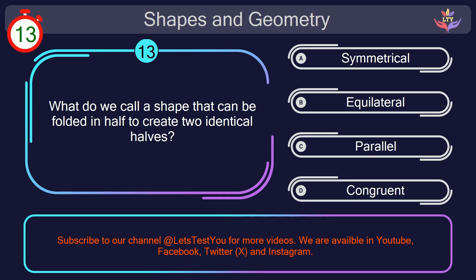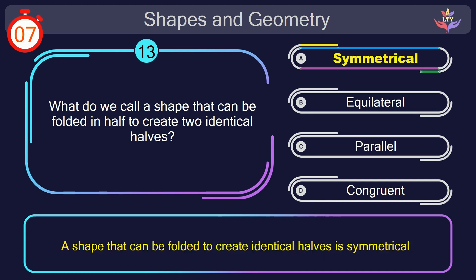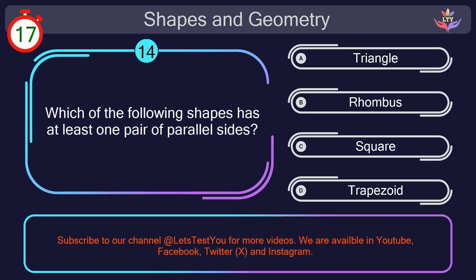Question number 13. What do we call a shape that can be folded in half to create 2 identical halves? Your countdown started. 1, here we go. The correct answer is option A. Symmetrical. A shape that can be folded to create identical halves is symmetrical.